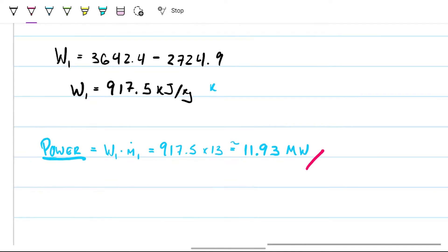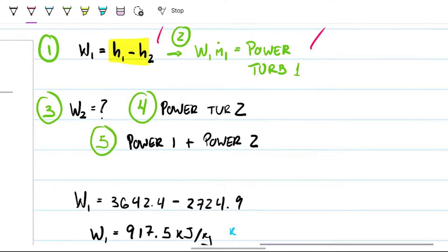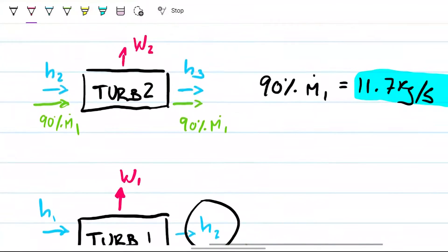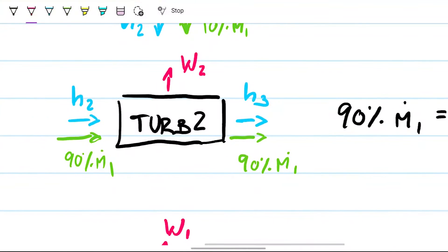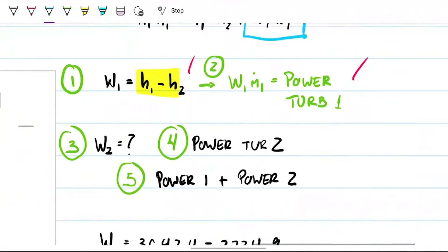Okay, so this is not the answer, but this is part of it. This is part of what we need to be able to get there. Next up, we did this. Next up, what is w2? Well, if we look at turbine two, it's actually very similar to turbine one. We have h2 coming in and we have work two and entropy three coming out. The only thing to remember is that this is only 90% of the mass, so we have to consider the 11.7 kilograms per second instead of the 13.